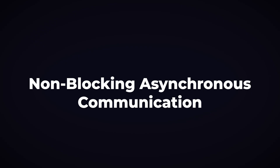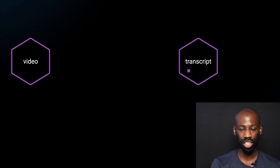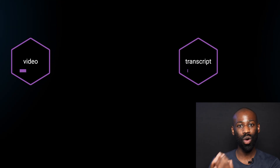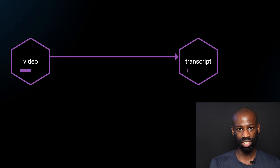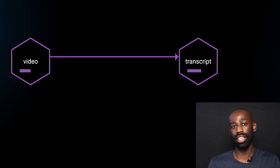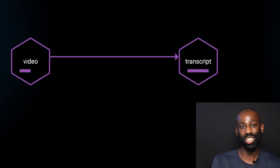Fortunately, there is another style of communication to get around this limitation. The video service could simply send a request to the TransCube service and not wait for a response. This style of communication is called non-blocking asynchronous communication. With it, the video service can continue to handle incoming requests while the TransCube service is processing its initial request. In a blocking style, if processing takes 5 minutes or even hours, the video service will be blocked that entire time. Clearly, synchronous communication doesn't really work in this case.